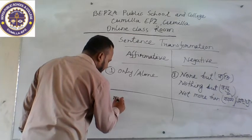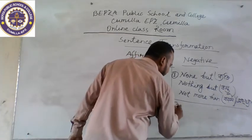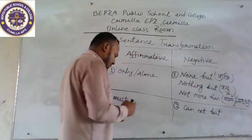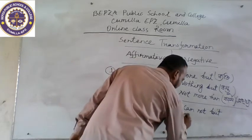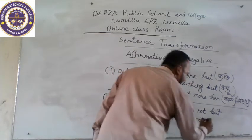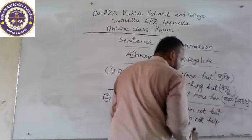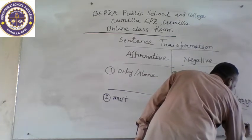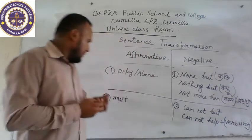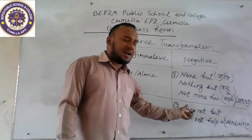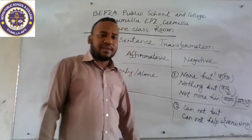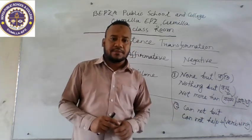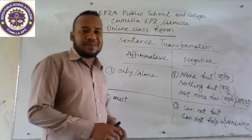Another thing you should keep in mind: if you get 'must' in the sentence, you can use 'cannot but' in the negative sentence. You can also use 'cannot help.' 'Must' is the affirmative form; we use 'cannot but' to make it negative. If you use 'cannot but,' you should use 'but' plus the '-ing' form of the verb in the sentence. Let us go to examples to better understand this.